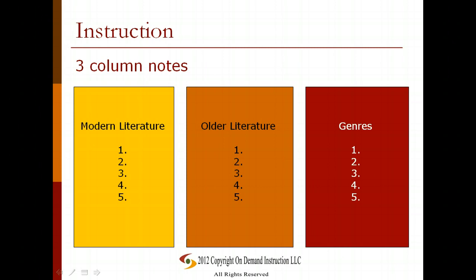You can also use three column notes. Three column notes are very popular amongst high school students because they're really easy and logical to use. Here we've broken down each column with each of the subtopics — modern literature, older literature, and genres — and all you do underneath is list out all of the different ideas that you have.